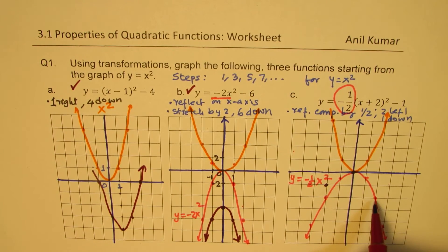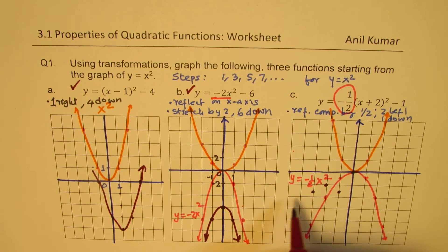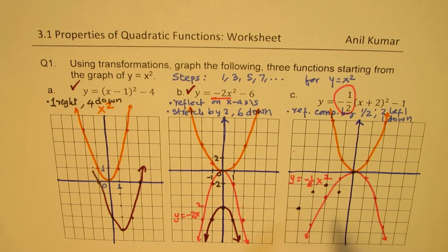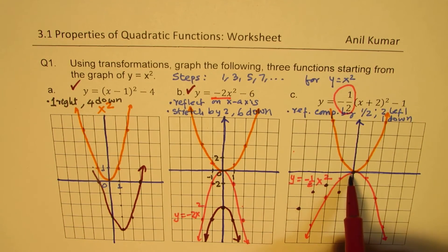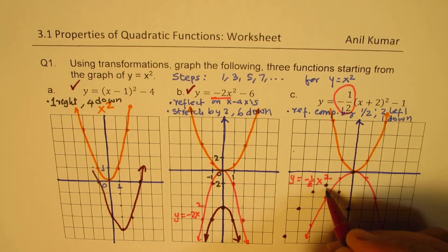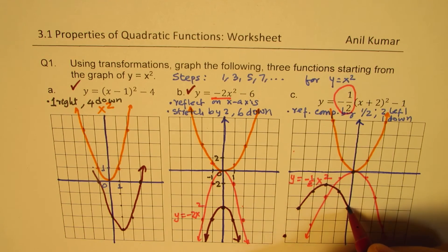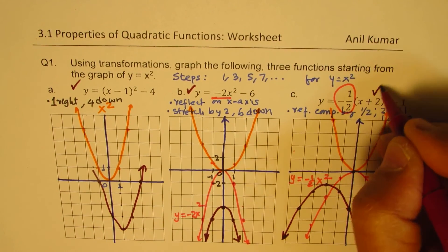All points move two units left and one down. This point moves two units left and one down. From symmetry we get the corresponding points — two units left and one down — on both sides. So we have a curve like this, and that becomes the graph of the third function y equals minus half (x+2) squared minus 1.